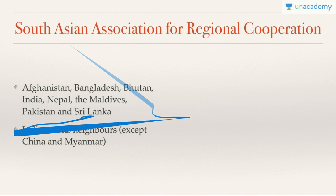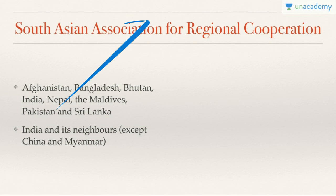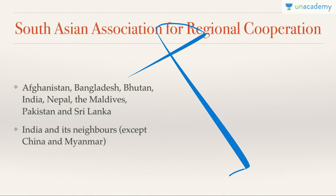India shares boundaries with seven countries. Remove China and Myanmar, and you have five: Afghanistan, Bangladesh, Bhutan, Pakistan, and Nepal. Then add India itself, plus Sri Lanka and Maldives — just remember those two extra. So SAARC members: Afghanistan, Bangladesh, Bhutan, Nepal, Pakistan, India, Sri Lanka, and Maldives. Forget China and Myanmar.